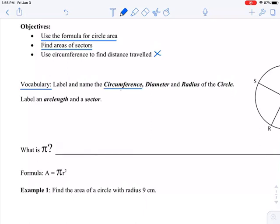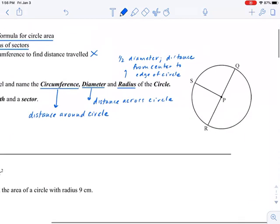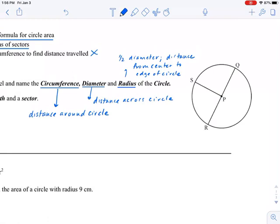First let's review some vocabulary. The first word we'd like to review is circumference. Circumference is the distance around a circle. The next word we'd like to review is diameter. Diameter is the distance across a circle.